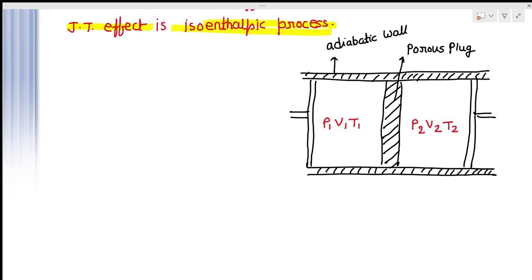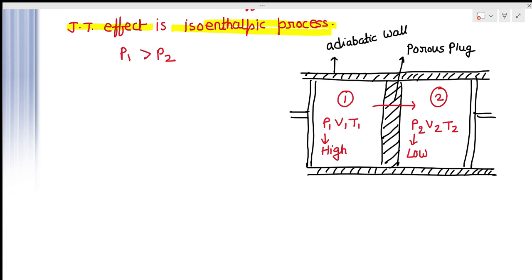In this system, the gas is allowed to pass through the porous plug from chamber one to chamber two — that is, from the region of pressure P1 to the region of pressure P2. Always remember that P1 is higher, meaning the gas is moving from high pressure to low pressure, so P1 is greater than P2. The gas is allowed to pass through the porous plug from left to right, maintaining the pressures P1 and P2 at constant values.